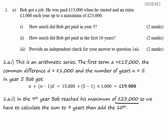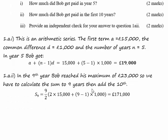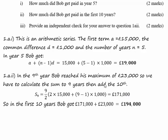So let's do the sum to 9 years. The sum to 9 is 9 over 2 plus 2 times the first term plus 9 minus 1 times 1,000, and that is equal to £171,000. And then for the 10th year, we have to add an additional £23,000 because he's clipped at that rate. So in the first 10 years, Bob earns £194,000.